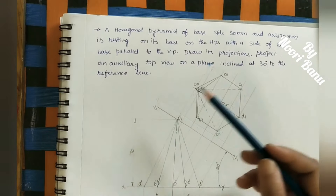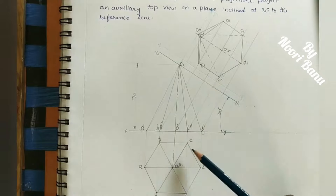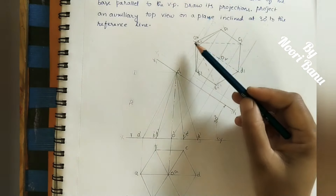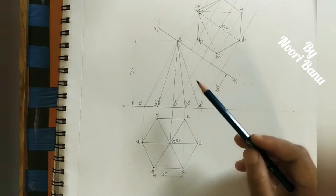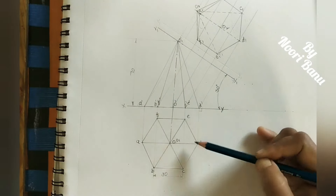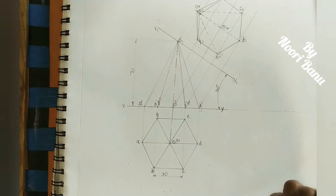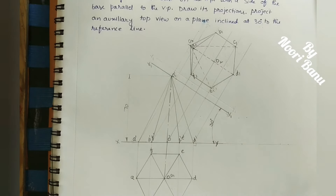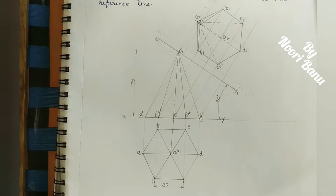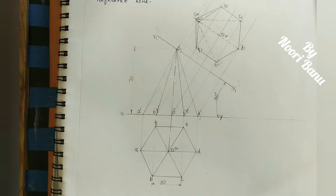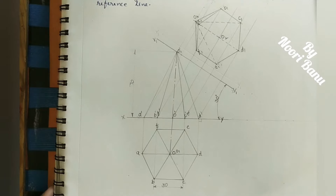Mark the given dimensions: axis length is 70 mm and side of the hexagon is 30 mm. Always remember the main auxiliary view as well as the front view and top view should be drawn in dark color compared to the projector lines — those are thin lines. The other lectures on auxiliary views will have video links in the description box. If you like this lecture, hit the like button, subscribe to my channel, and share with your friends. Thank you for watching.